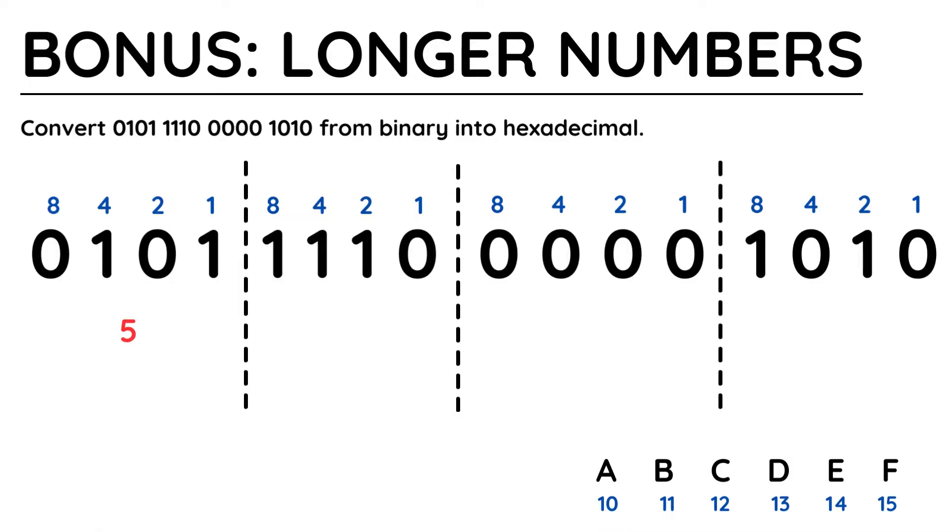Starting from the left, 4 plus 1 is equal to 5. 8 plus 4 plus 2 is 14, 14 in hexadecimal is the letter E. If there are just 4 zeros, don't leave it blank, you simply put 0 for that nibble. Finally, 8 plus 2 is 10, which is equivalent to A.